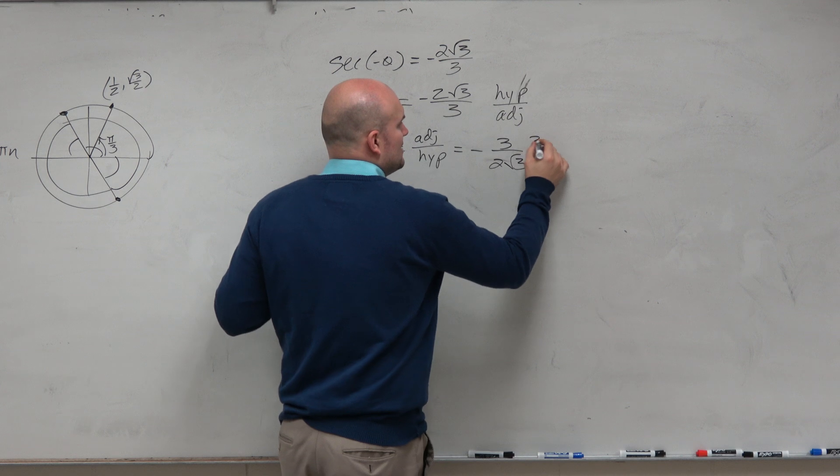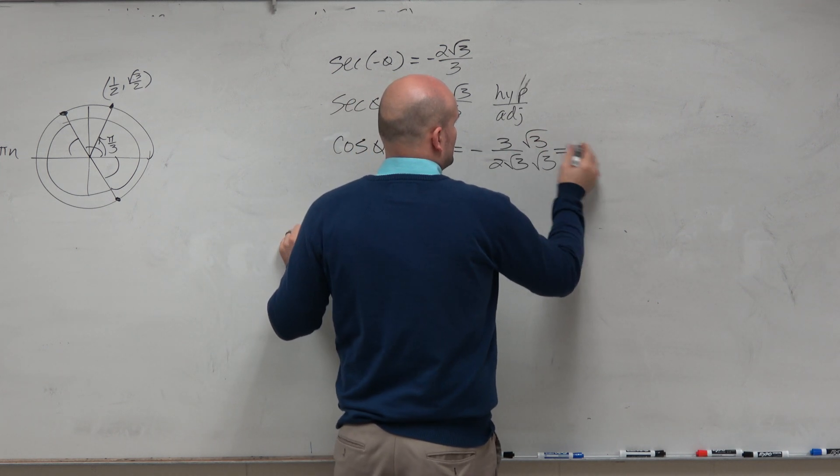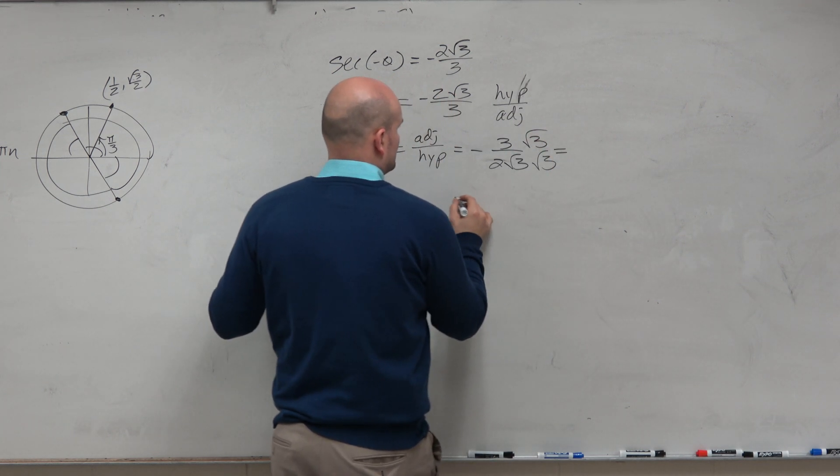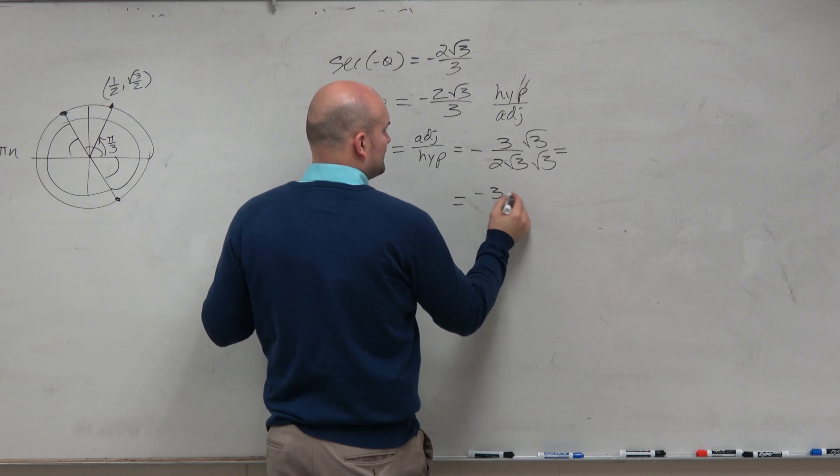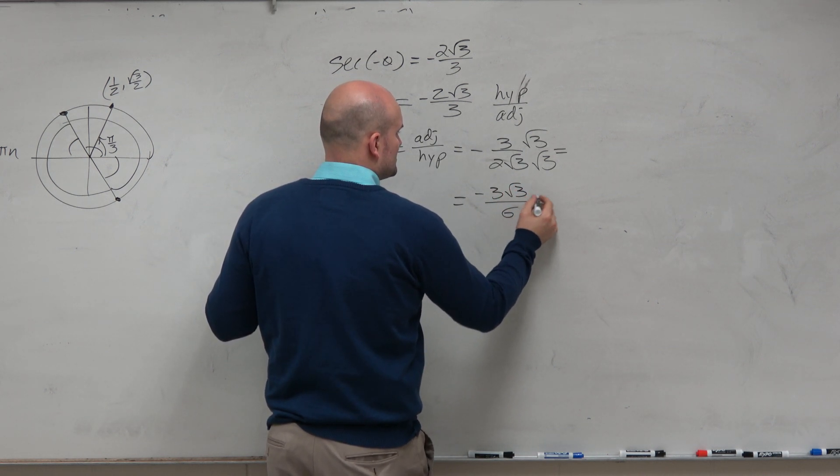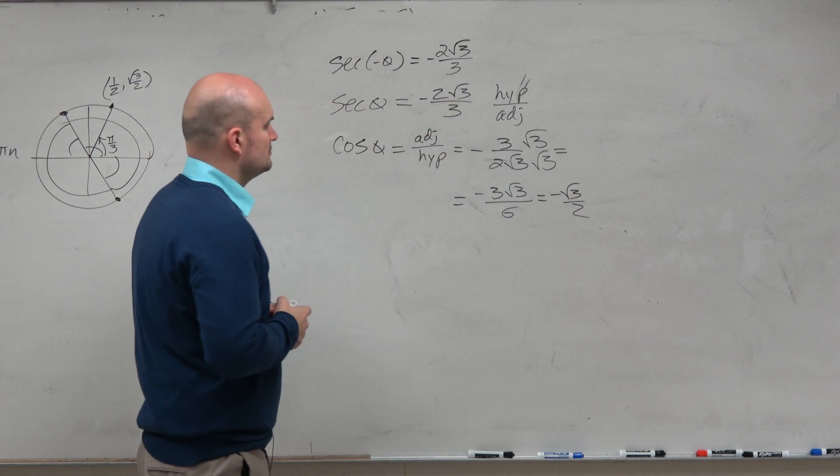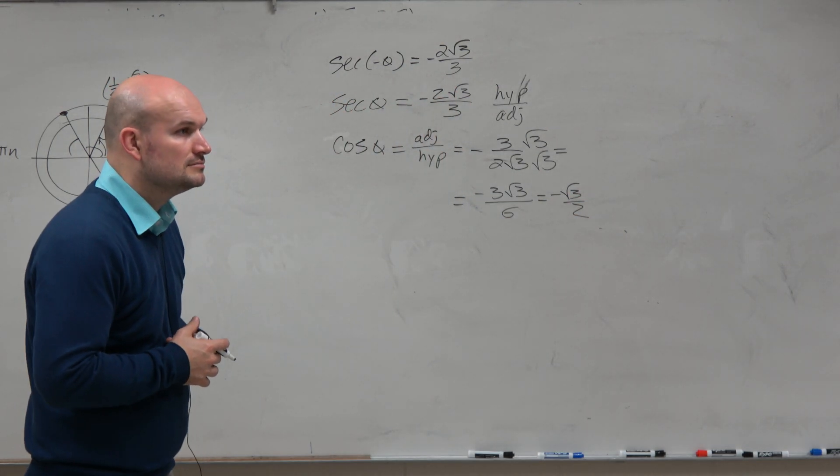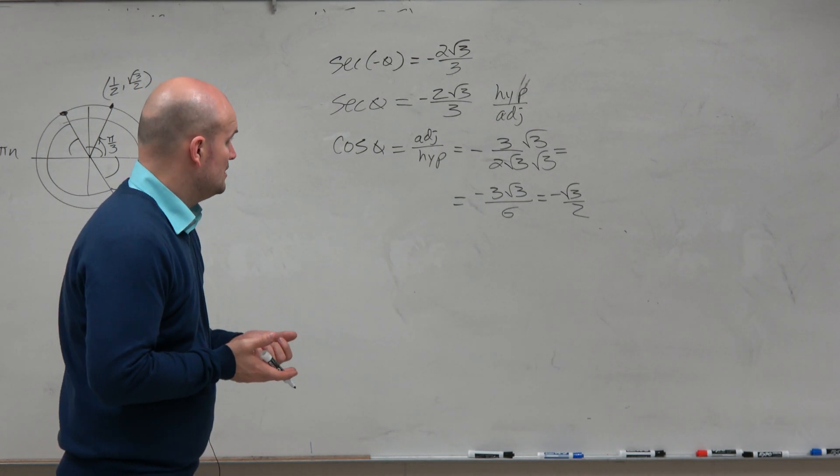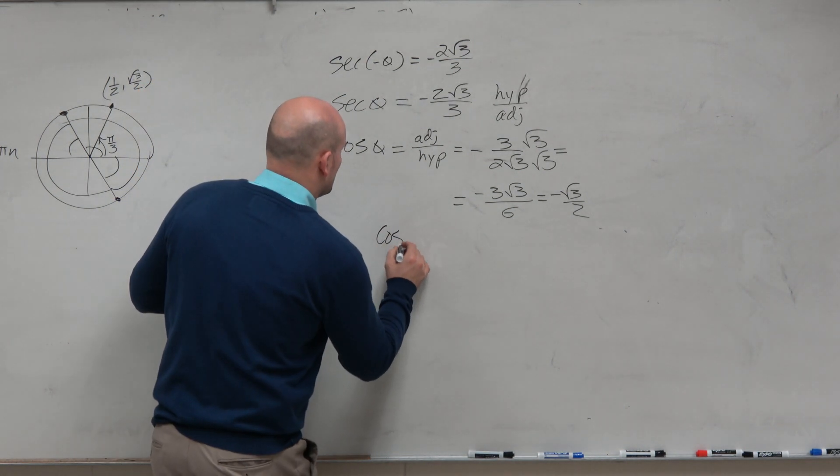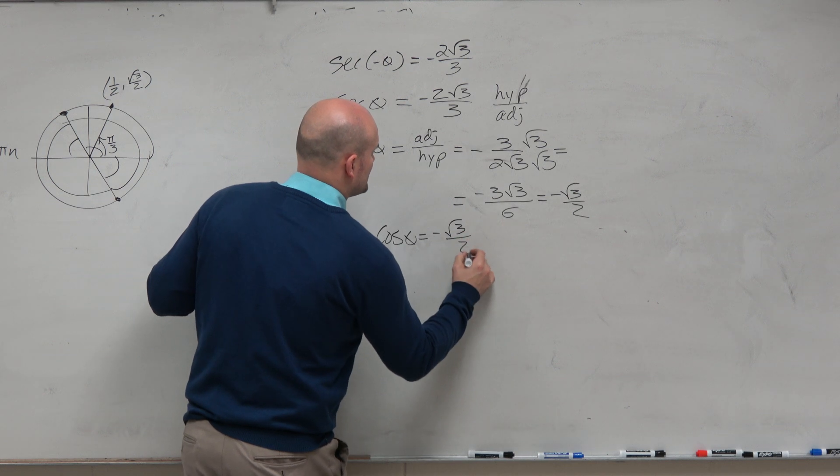And when you rationalize the denominator, you get, let's put it down here, you get a negative 3 square root of 3 over 6, which equals a negative square root of 3 over 2. So we're basically looking for, when is the cosine of theta equal to the negative square root of 3 over 2?